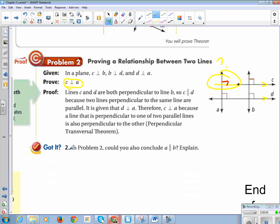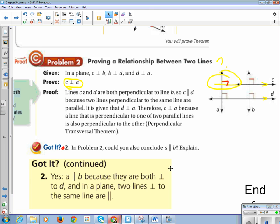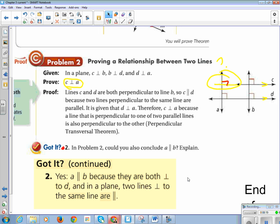So let's look at our got it. In problem number two, could you also conclude that A is parallel to B and explain? Oh yeah. The answer is yes. A is parallel to B because they are both parallel to D. And in a plane, two lines perpendicular to the same line are parallel.